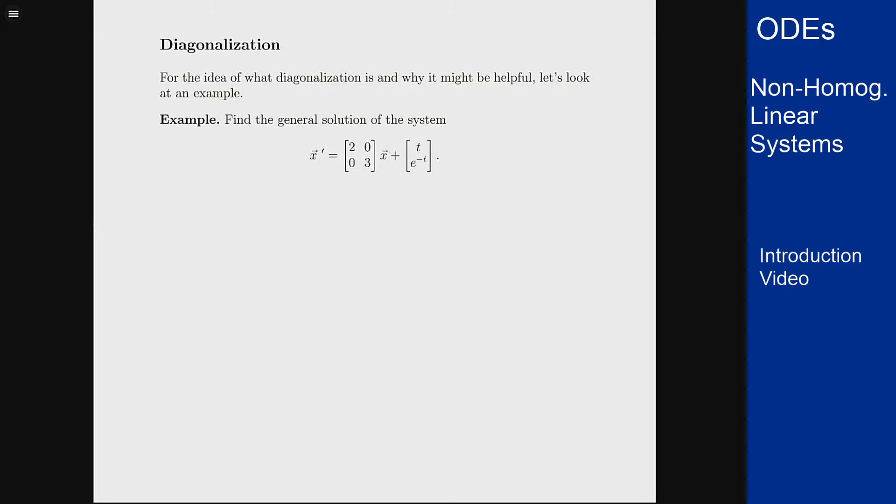Let's see an example of why this could be useful. Look at this system here: x prime is the matrix [2 0; 0 3] times x plus the vector [t; e^(-t)].